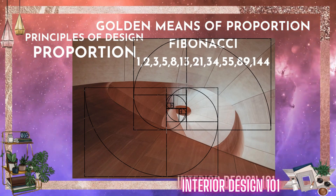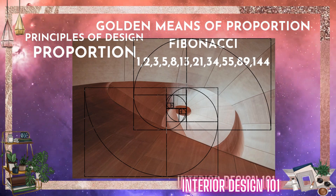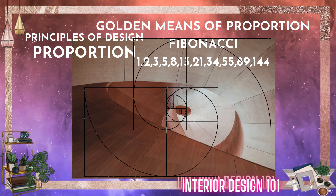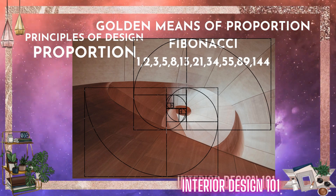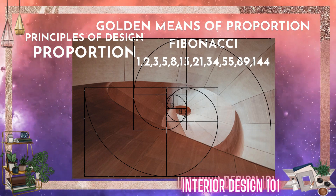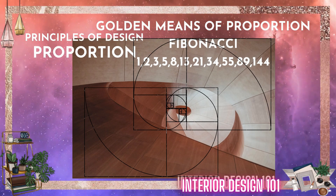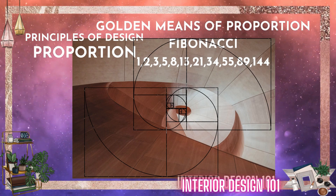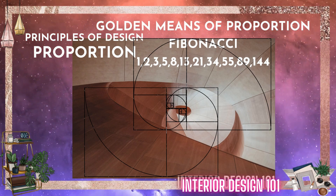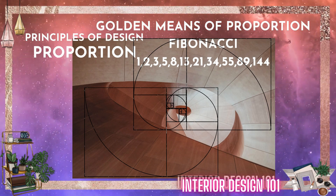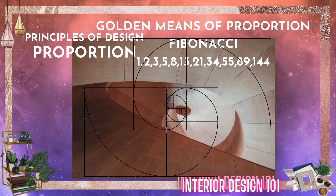The golden mean is achieved by multiplying everything by one: 1×2, then 1×3, then 1×5, and so on. So if there is a 1 cm by 1 cm square, the second will be the same. But the third will be 3 cm by 3 cm, then 5 by 5, and so on. This theory can help you create a very proportionate design.